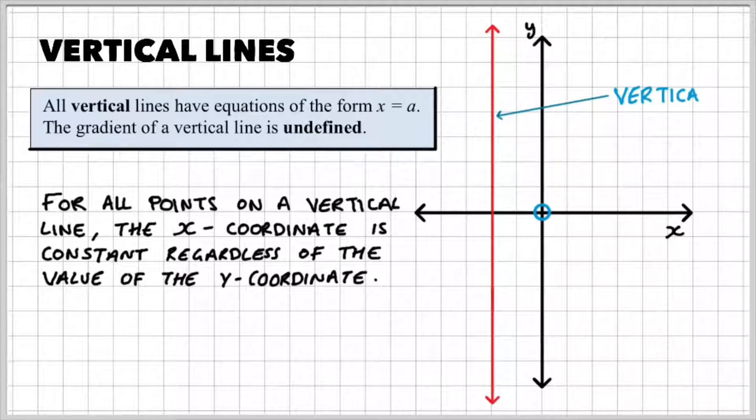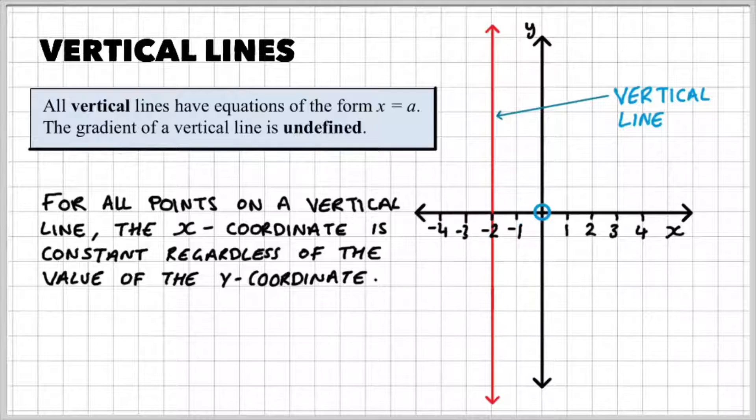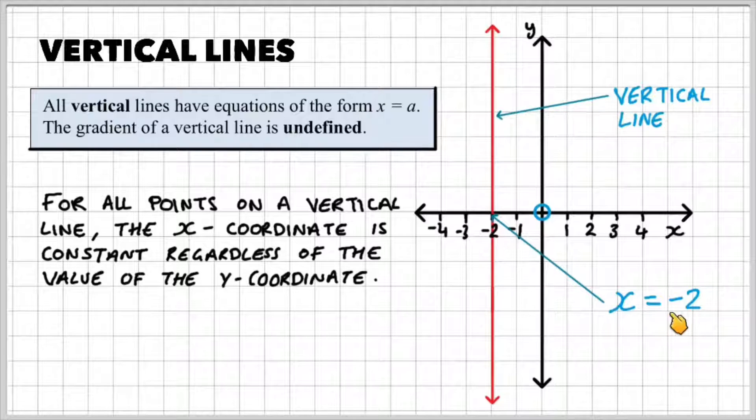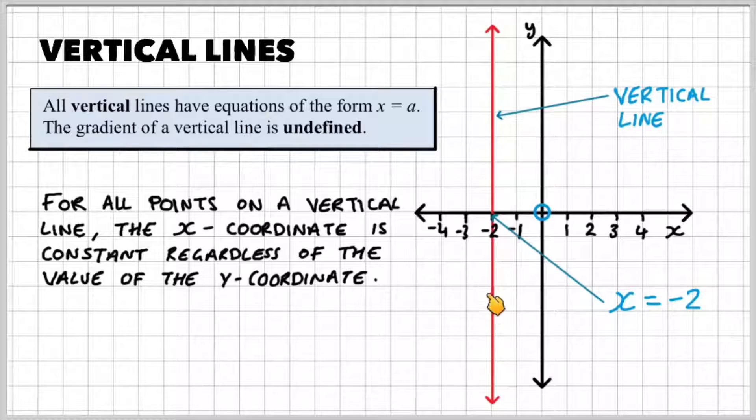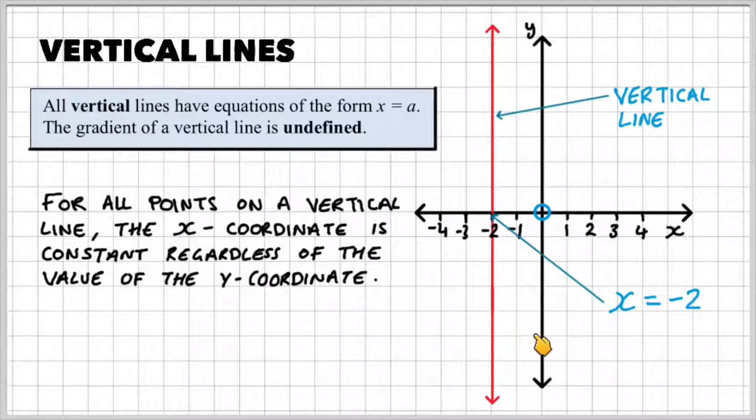So like I mentioned before, the red line represents a vertical line. If I fill the values on my x-axis, you can see that this line passes through where x is equal to minus 2. Irrespective of what the y-value is, the line is going to remain on the point where x equals minus 2.